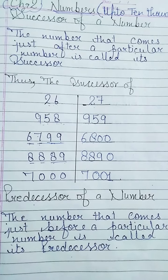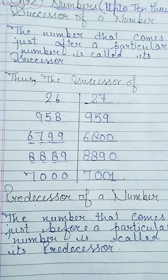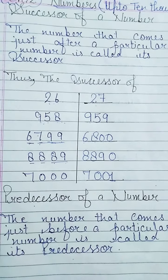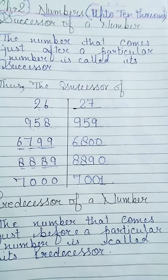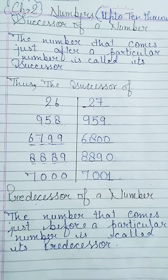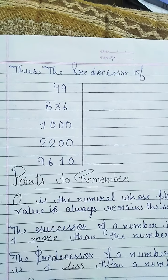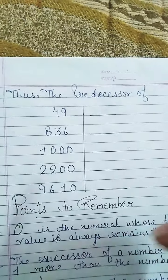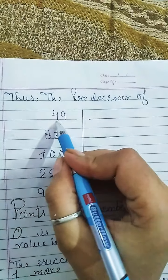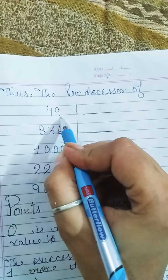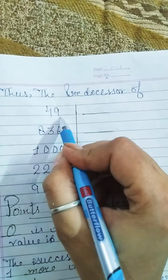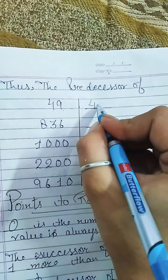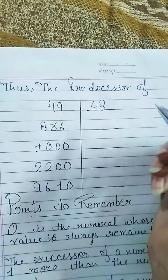For example, we have 79. So 79 minus 1 means 78. The previous number — 78 — is called the predecessor. Here are some examples. We will do it. 49: 49 minus 1 — what is it going to be? 48. So the previous number is 48.